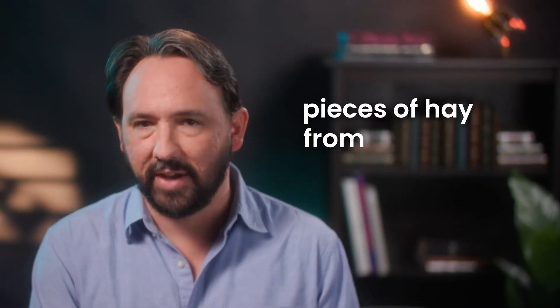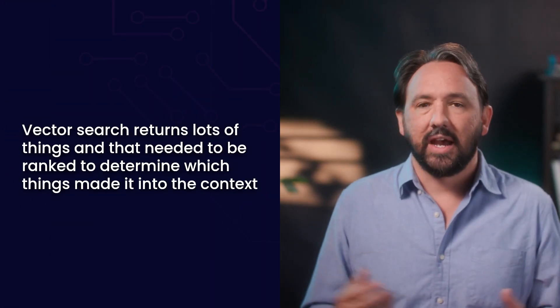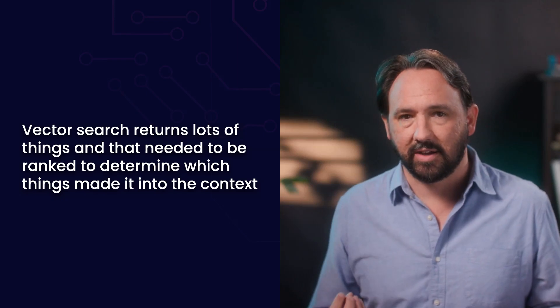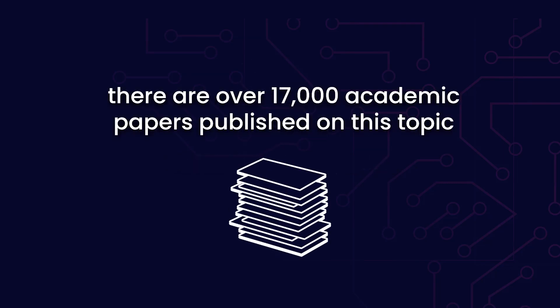How do I get the right pieces of hay from this haystack? Then we realized that people aren't very good at prompting, so we should do pre-retrieval optimization and append things to the context that the user didn't actually write — things like 'you are a helpful assistant' and the like. Then vector search returns lots of things, and that needed to be ranked to determine which things made it into the context. There was also a lot of research on graph RAG, light RAG, and path RAG. In the last five years, over 17,000 academic papers have been published on this topic, and what they all share in common is that they are directly or indirectly trying to solve an unstructured data problem — a problem that's particularly well-suited for expert knowledge modeling via ontologies and knowledge graphs.